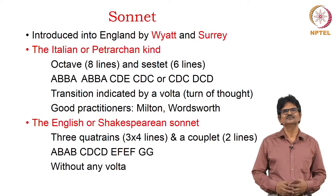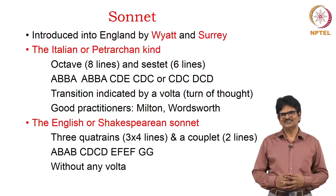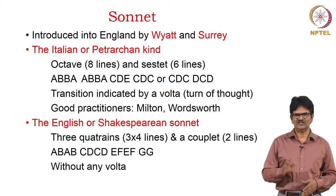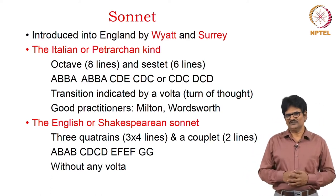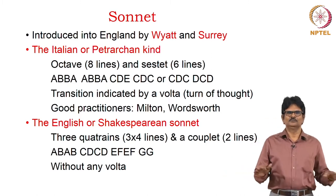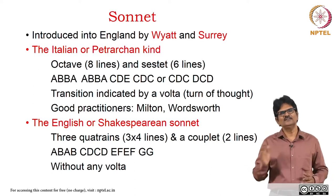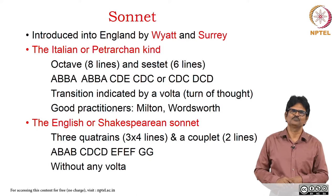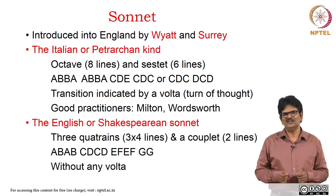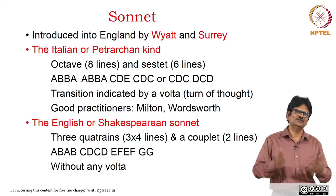The next form we deal with is the sonnet. It's a very famous poetic form, introduced to England by Thomas Wyatt and the Earl of Surrey. We have two kinds of sonnets. One is called the Italian or Petrarchan sonnet, which has two divisions: one is called octave with eight lines, another is called sestet with six lines. The rhyme scheme goes ABBA ABBA CDE CDR CDC DCD, and it may have many variations. There is a transition from the octave to the sestet indicated by what is known as Volta, which means a change or turn of thought. Good practitioners of this form include Milton and Wordsworth.